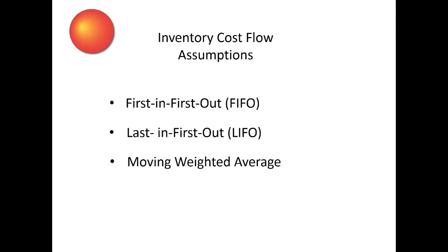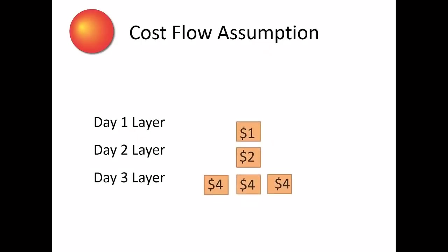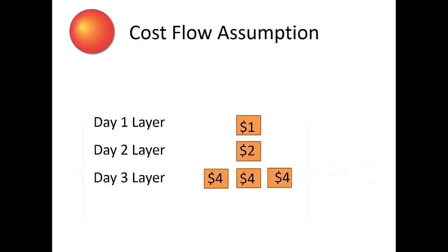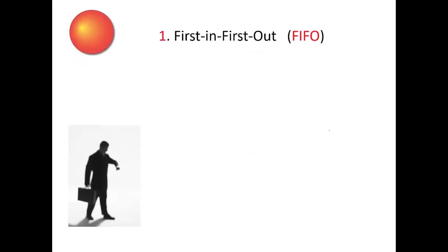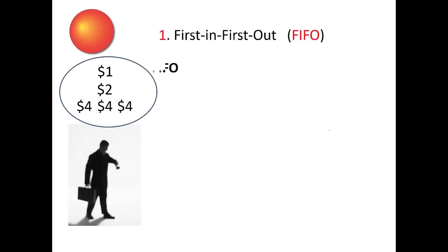I recommend you treat unit costs as little cost stickers, which are theoretically stacked up in order on the date they are purchased. These unit costs are then reassigned to cost of goods sold on a FIFO, LIFO, or moving weighted average basis. Under FIFO, management assigns the unit cost of the first unit purchased in to become the unit cost of the first goods sold out.